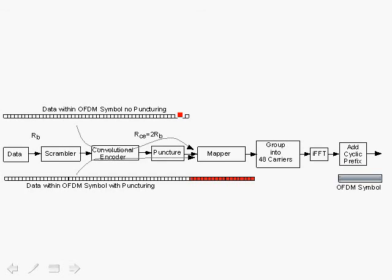To further illustrate the operation of puncturing, this picture illustrates the whole concept. We have data generated at data rate R-sub-V. It goes through the scrambler, which just randomizes the data, then through the convolutional encoder where the rate is doubled — for every bit we get two bits out, adding redundancy for error correction. Skipping the puncturing, we would normally go to the mapper and map, for example, every four bits in the case of 16QAM to a carrier, group the carriers, perform the inverse FFT on 64 carriers including pilots and guard intervals, add the cyclic prefix, and we have the OFDM symbol. The OFDM symbol would then contain the coded data at the half rate.